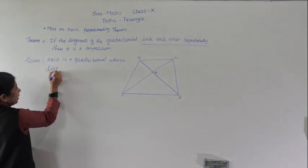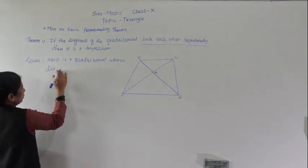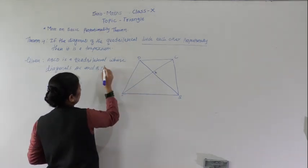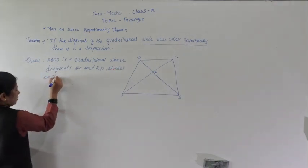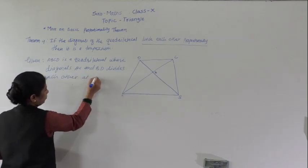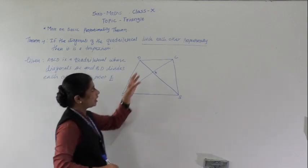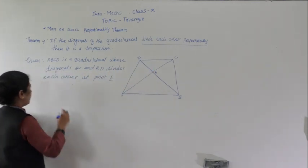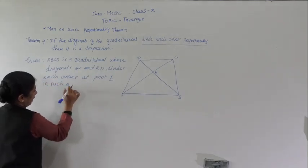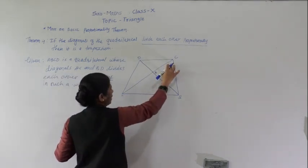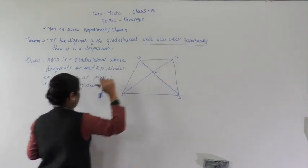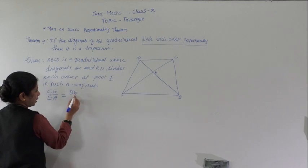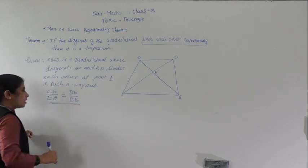We draw the quadrilateral. Diagonals AC and BD intersect each other and divide each other at point E. The way they are dividing each other is proportional, so we can write: CE upon EA equals DE upon EB. That is, CE/EA = DE/EB — this is how they divide each other.